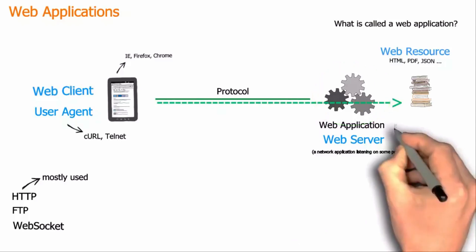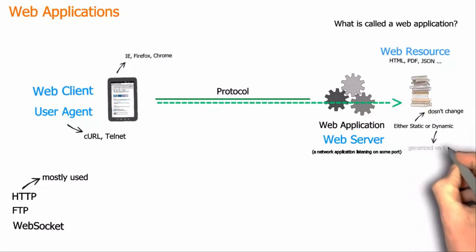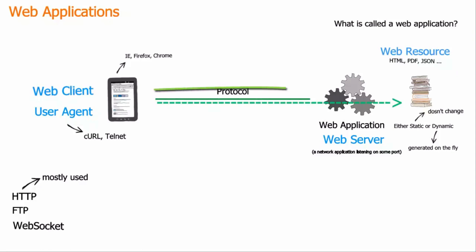A resource could be either static or dynamic. A resource which does not change is called a static resource — it's like some static file sitting on the web server's hard disk which the web server has access to. When a request for a static resource comes from a web client, the web server passes that resource to the web client straight. In contrast, a dynamic resource is generated on the fly, meaning when a request comes from a web client, the web server builds the resource dynamically.